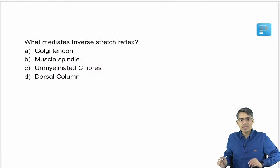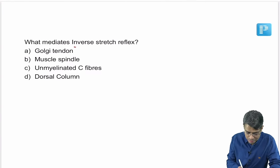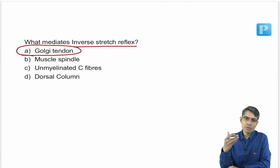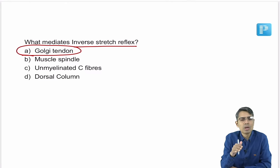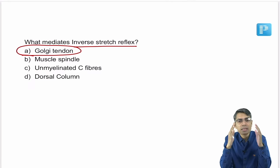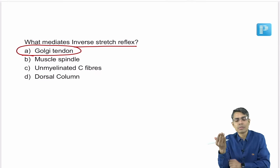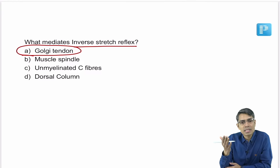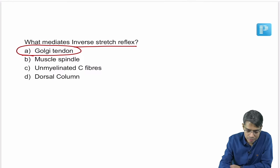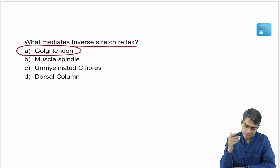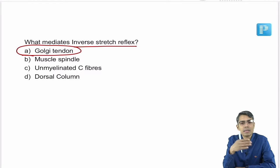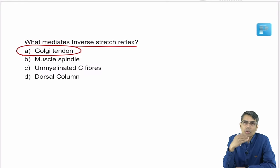Inverse stretch reflex is mediated by the Golgi tendon organ — already discussed. The acrosomal reaction occurs in the female genital tract (fallopian tube) just before sperm entry into the ovum. Enzymes in the head of the sperm are released to help penetration. Sequence: capacitation (hypermotility) → reach ovum → acrosomal reaction → fertilization.